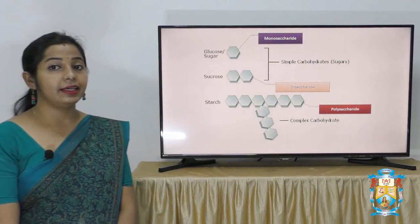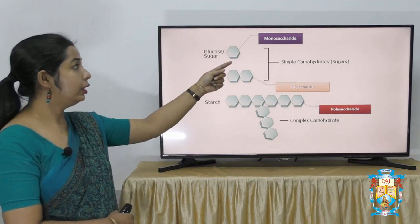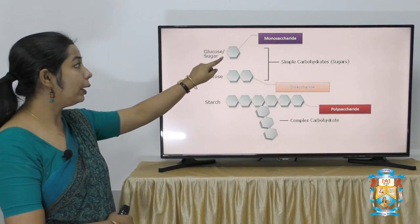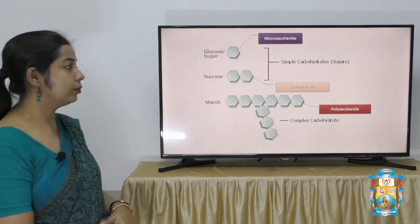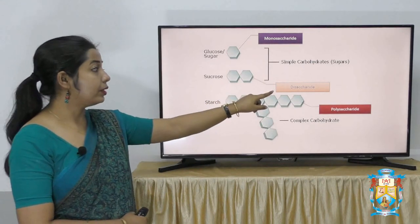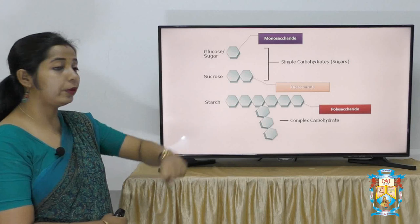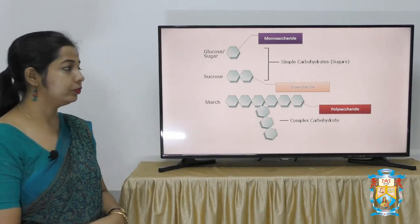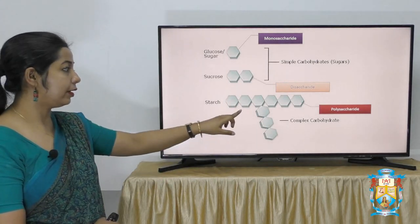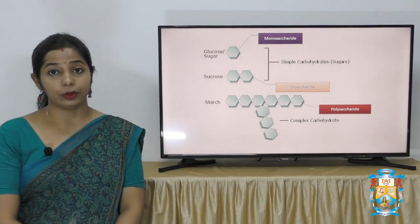As you can see in the slide, glucose is a monosaccharide and is made up of one monomeric unit. Sucrose is an oligosaccharide, which is made up of several monomeric units.